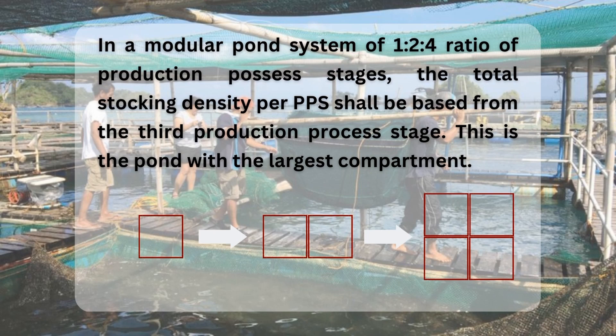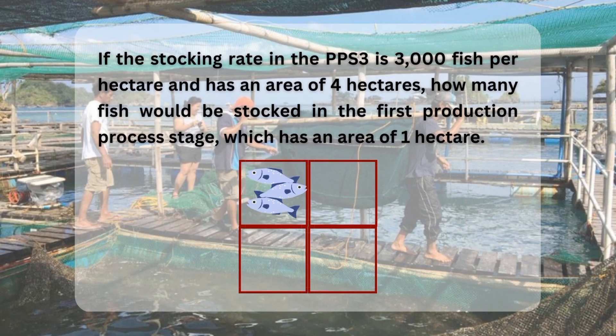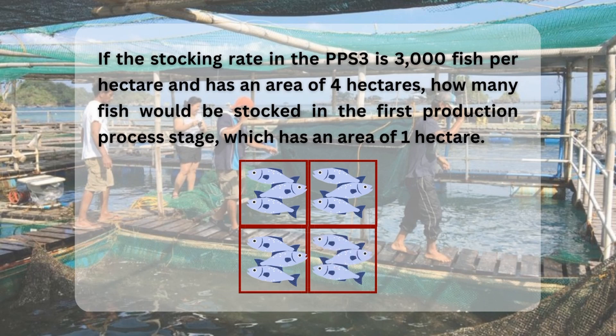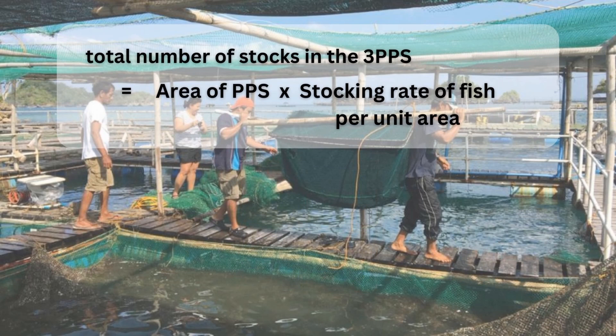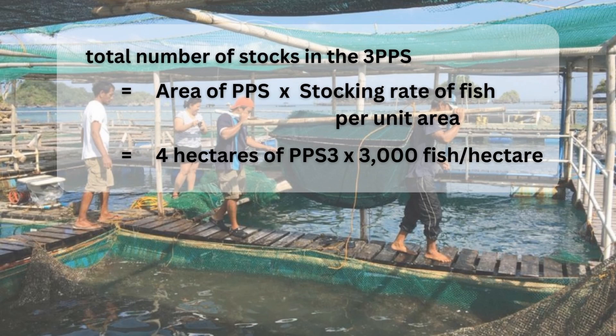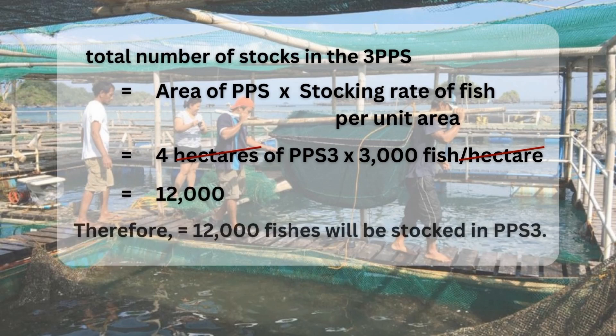This is the pond with the largest compartment. If the stocking rate in the third production process stage is 3,000 fish per hectare and has an area of 4 hectares, how many fish would be stocked in the first production process stage, which has an area of 1 hectare? To solve this, we multiply 4 hectares by 3,000 fish per hectare, which equals 12,000. Therefore, 12,000 fish will be stocked in the third production process stage.